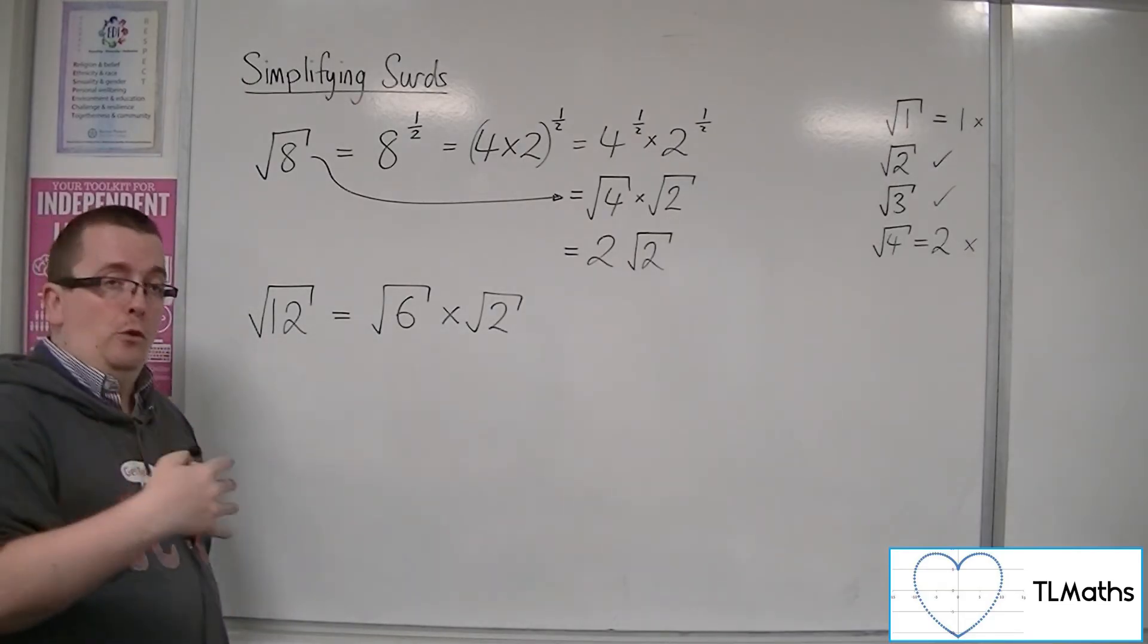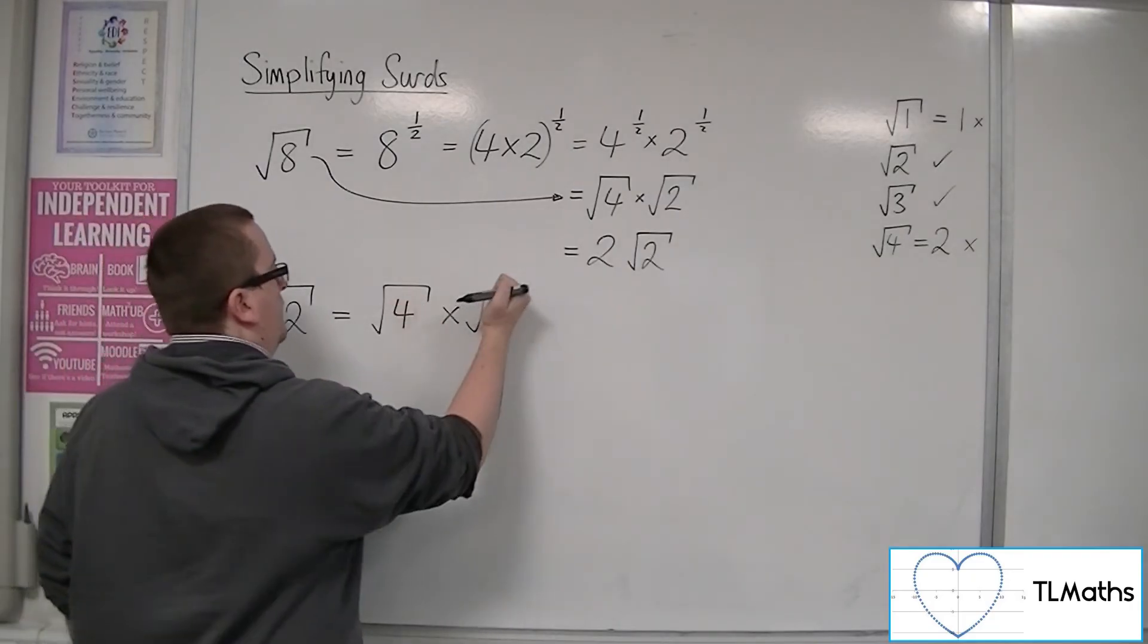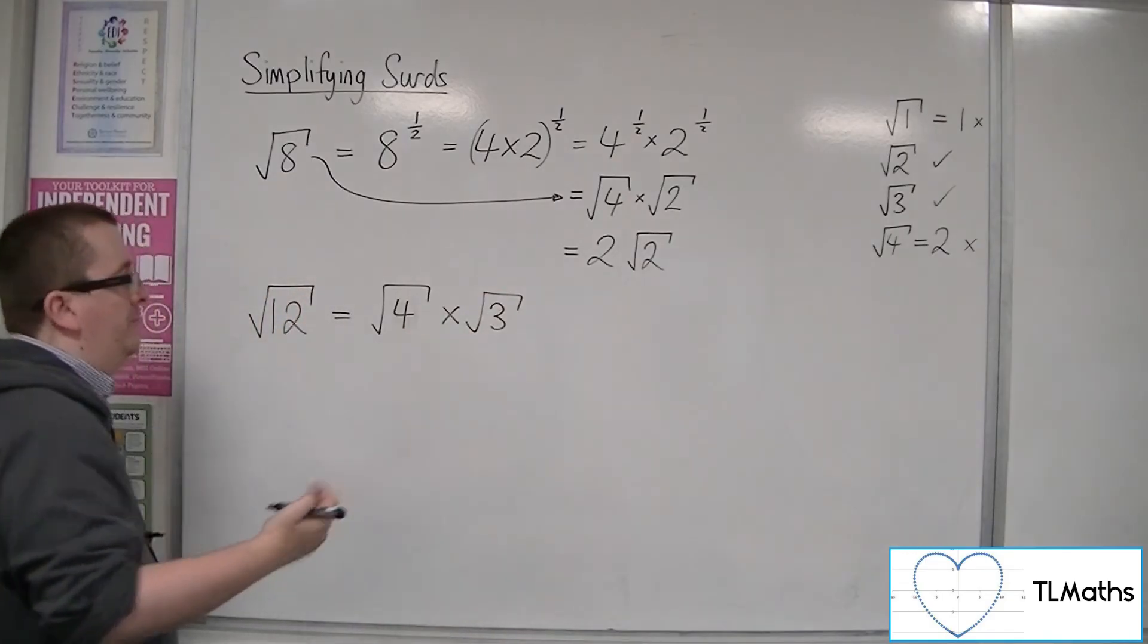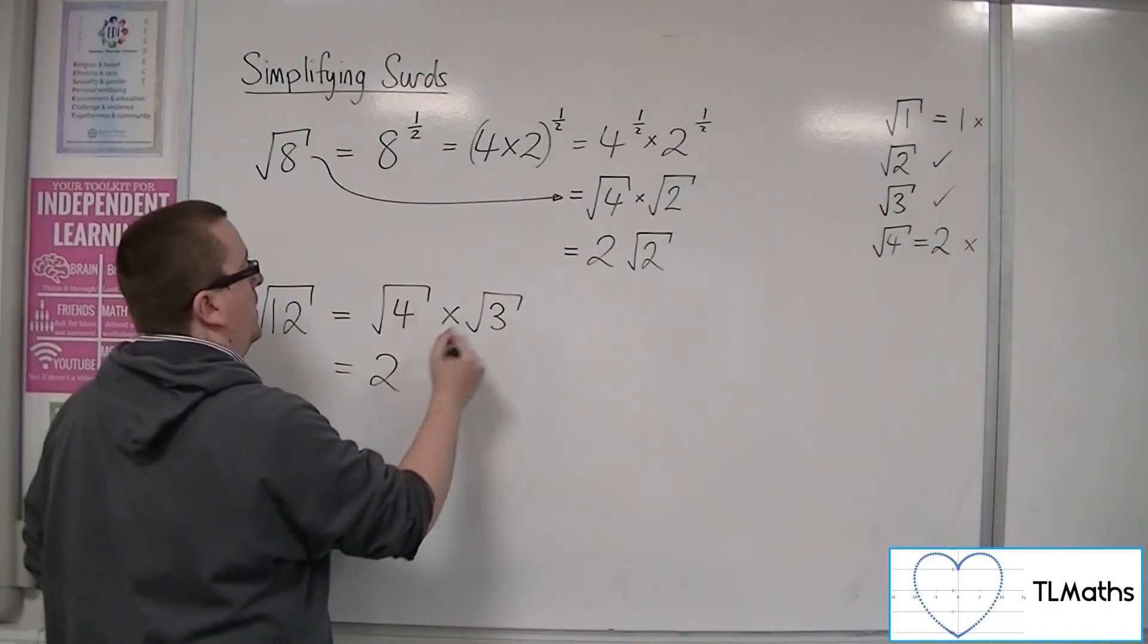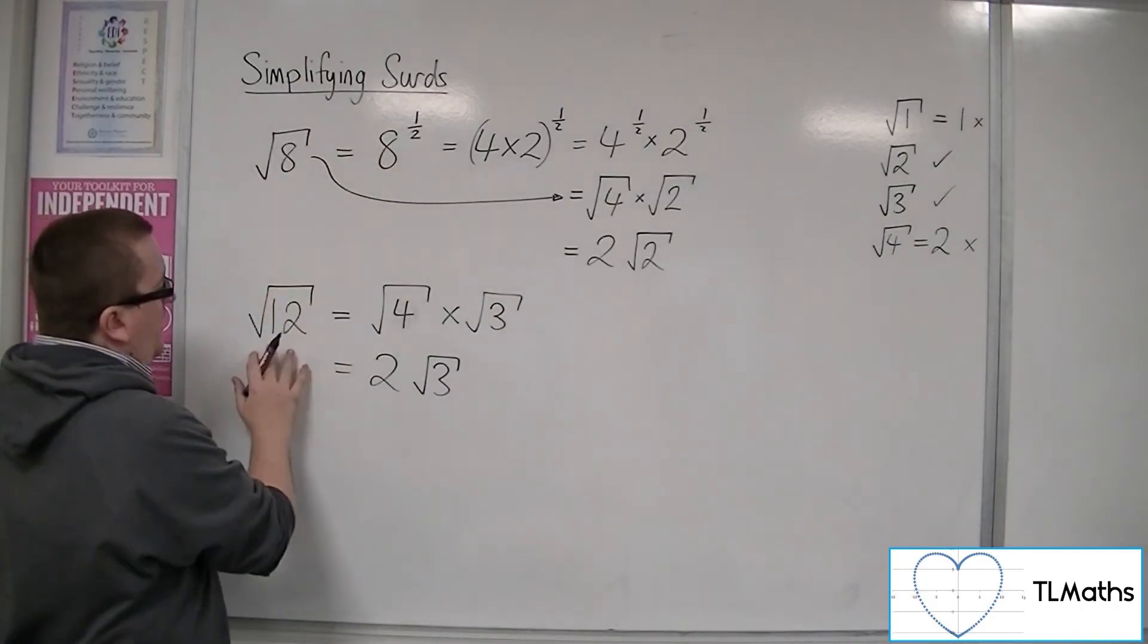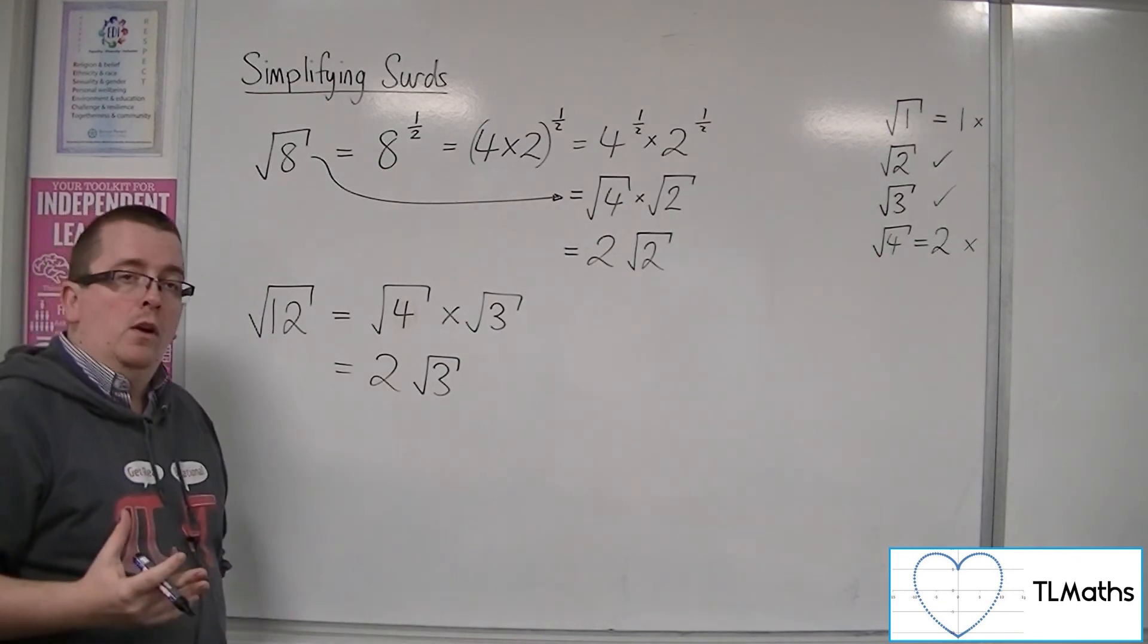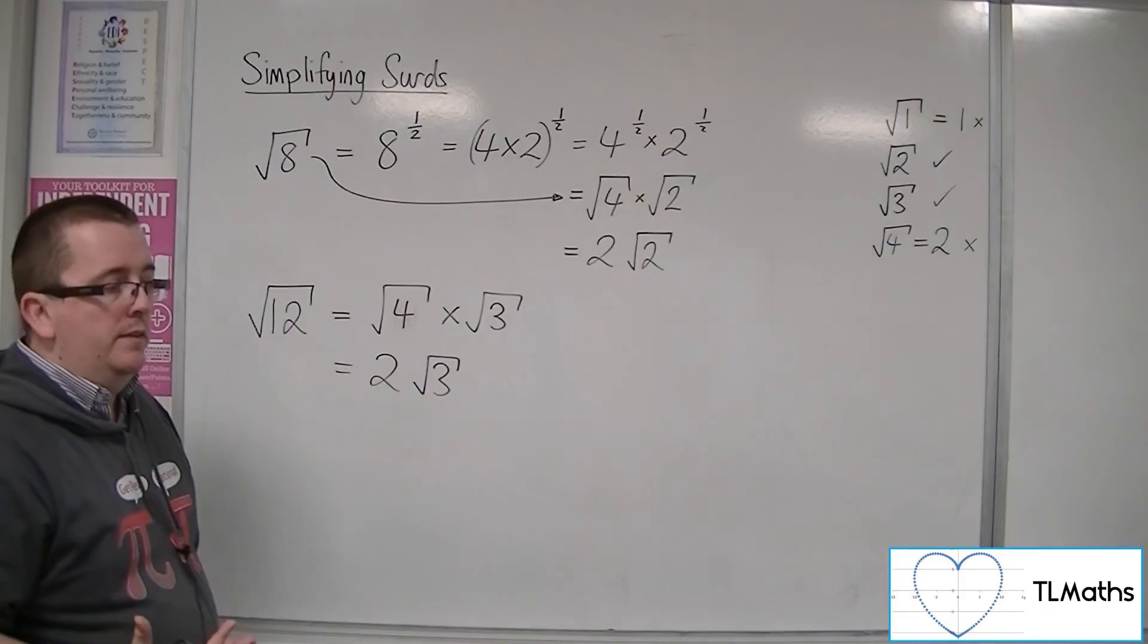So I don't want 6 and 2. I want to know, are there any square numbers that go into 12? Yes, there is. 4. So if I rewrite this as 4 and that one as 3, 4 times 3 is 12, then I have square root of 4 is 2, root 3. So root 12 is 2 root 3. So you can simplify a surd by rewriting it as a multiple of another, a simpler surd, if you will.